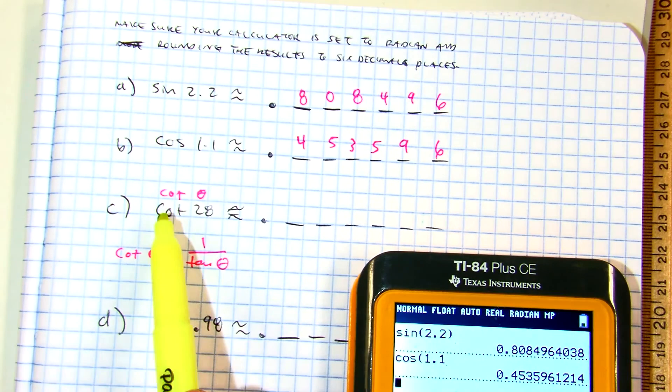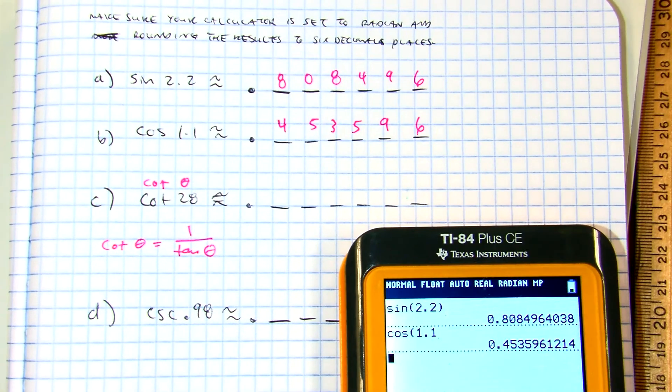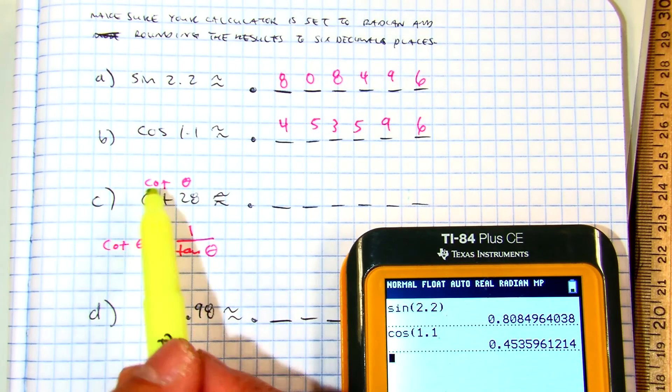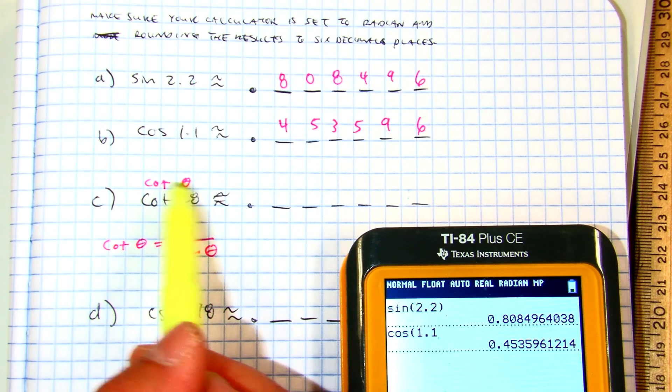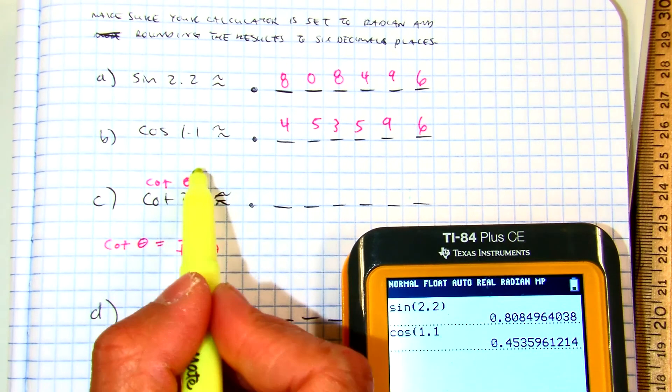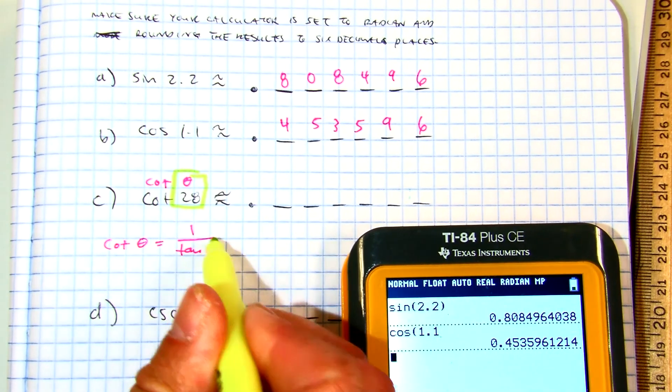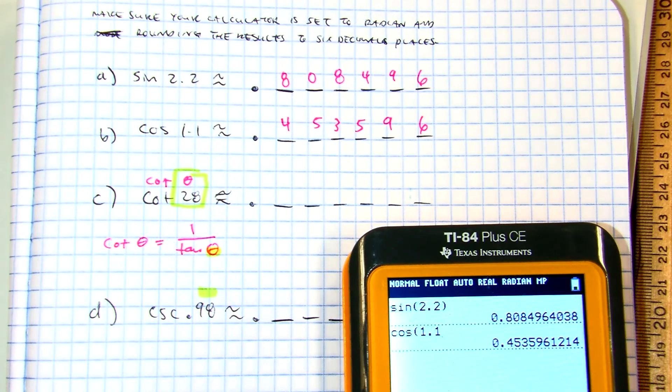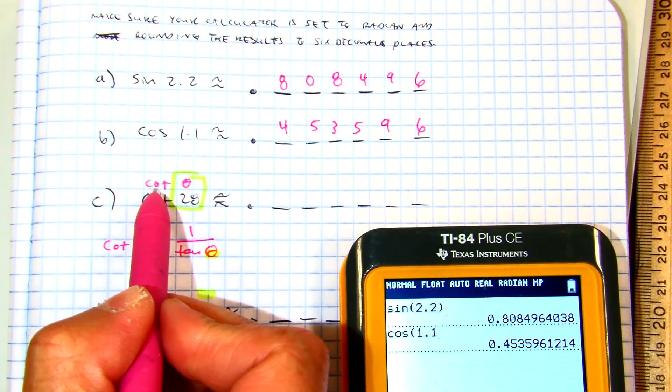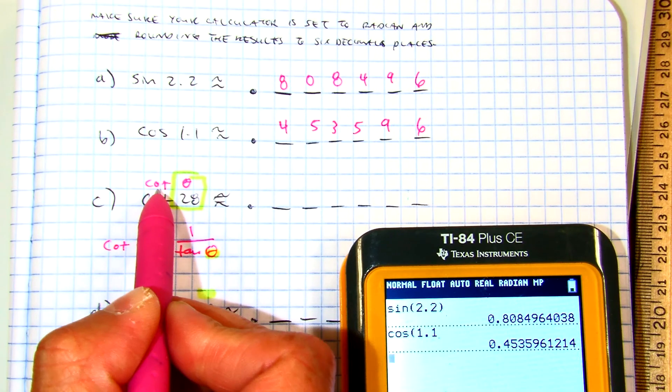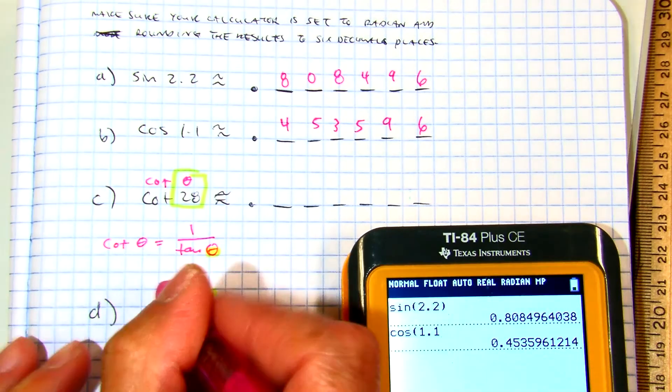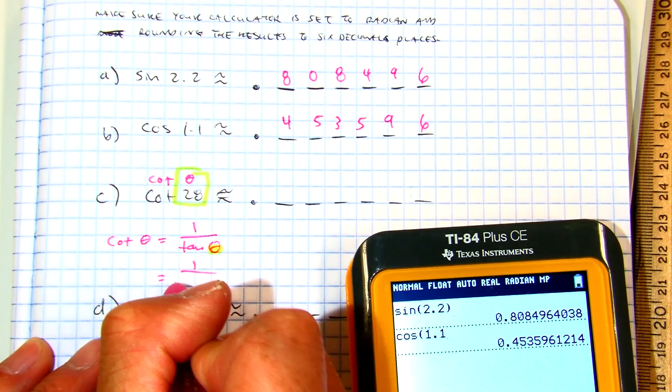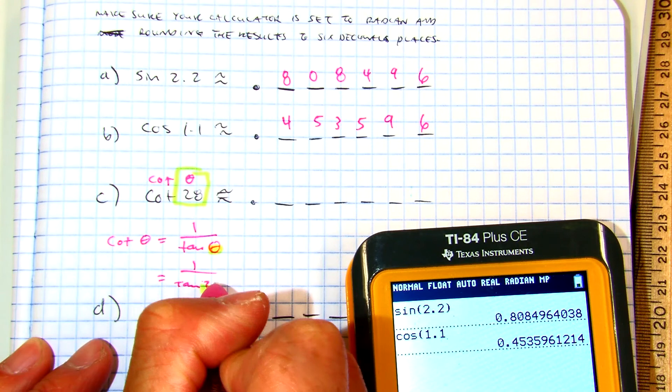So if you get lost, this is a common mistake for students using the reciprocal identity. If you get lost, look what I did. I wrote cotangent of 28, and right above it I wrote cotangent of theta. Theta is 28, but it also tells me that I should be finding a formula or an identity where it says cotangent equals. Okay?